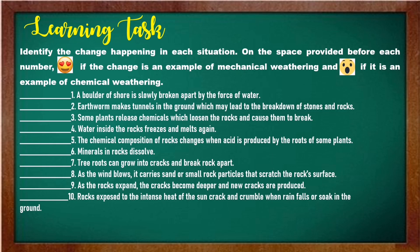Number one: a boulder on shore is slowly broken apart by the force of water. Number two: an earthworm makes tunnels in the ground which may lead to the breakdown of stones and rocks. Number three: some plants release chemicals which loosen the rocks and cause them to break. Number four: water inside the rocks freezes and melts again. Number five: the chemical composition of rocks changes when acid is produced by the roots of some plants.